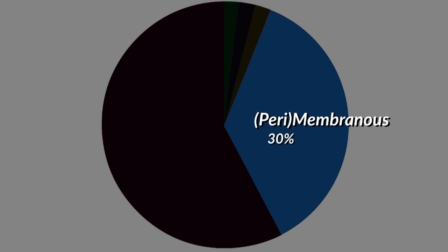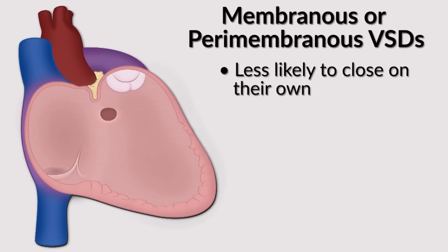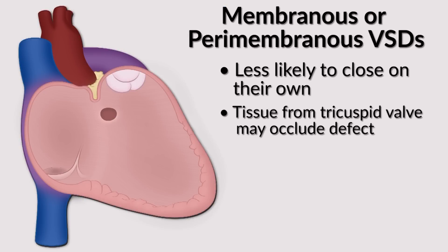The next most common type is membranous, also known as peri- or paramembranous defects. These account for about 30% of the total ventricular septal defects we see. These lesions are less likely to close on their own; however, sometimes tissue from the tricuspid valve will occlude the defect, and so they will close in that circumstance.